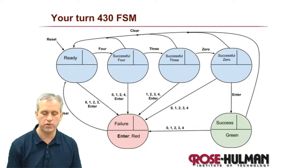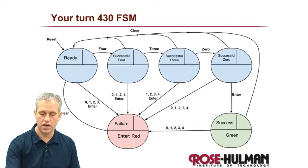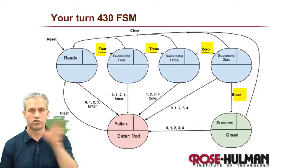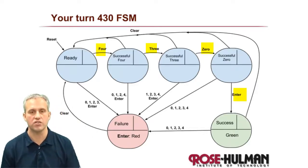Hopefully you're able to put together a finite state machine that kind of caught these features for how it moves around. Should be a total of six different states. And this is the thing that we're going to try to implement on different systems.